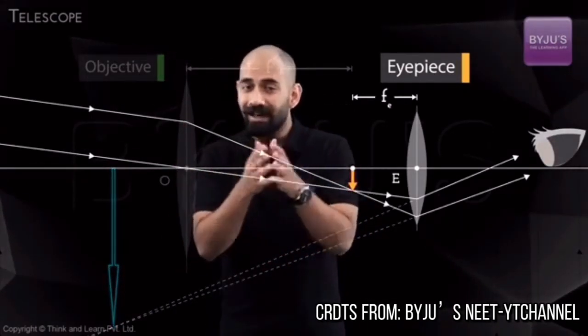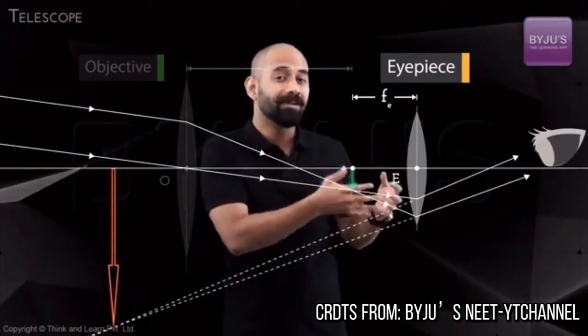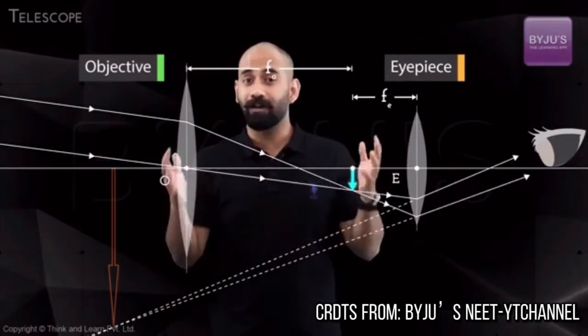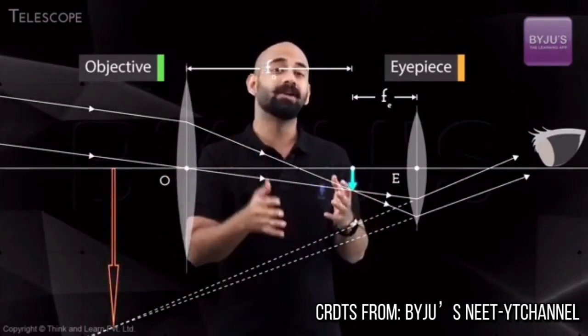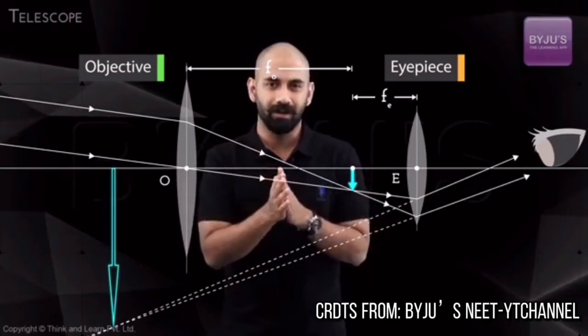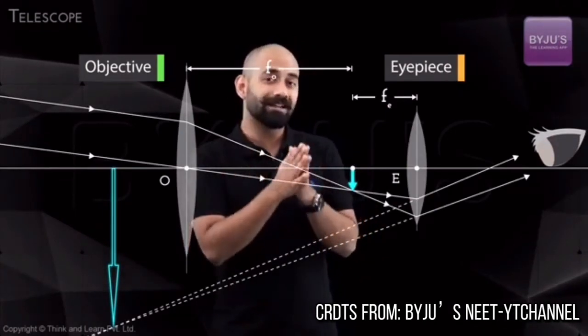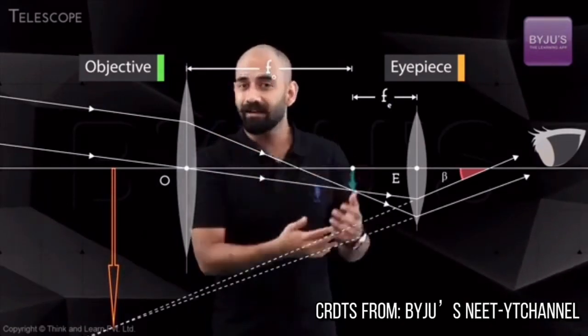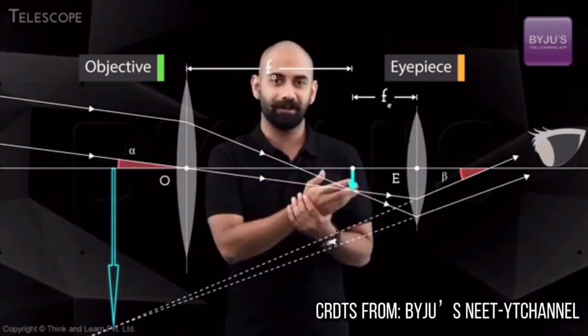Why? Because this image acts as an object for the eyepiece. And why is the image inverted? Because this image also is inverted. So you finally end up having a virtual, inverted, and magnified image. Now, you can see that the angle subtended by this image at the eye is greater than the angle that the object subtended at the eye.